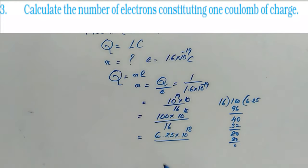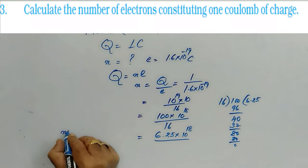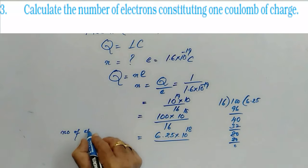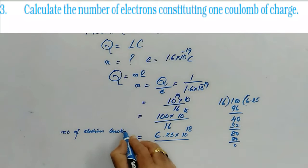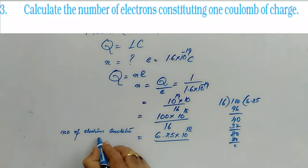6.25 into 10 to the power of 18 electrons, if you put at a particular place, then it constitutes 1 coulomb charge. So you can understand how big is the coulomb. The number of electrons that constitute a charge of 1 coulomb is 6.25 into 10 to the power of 18. It is a very big number.